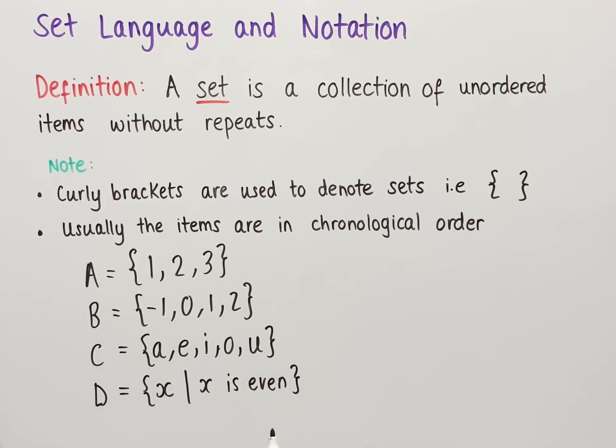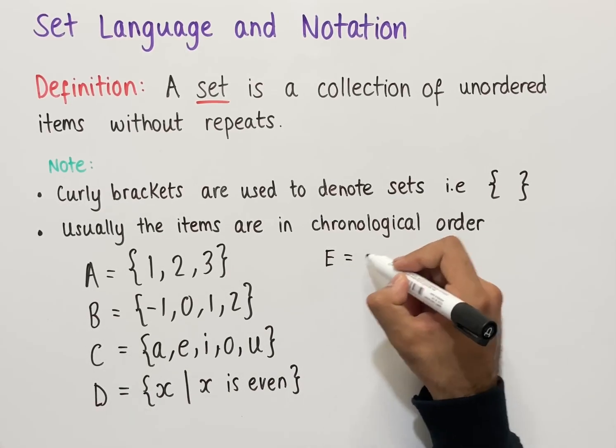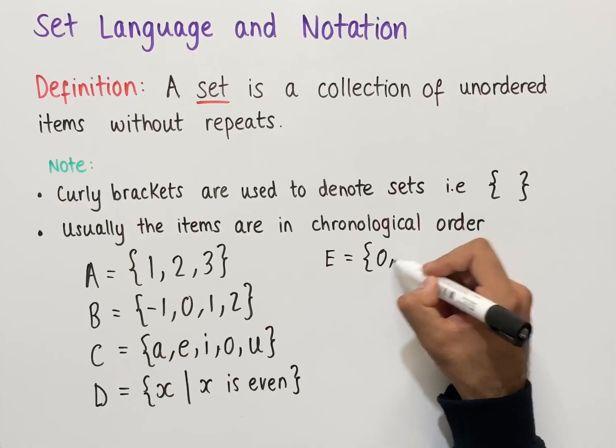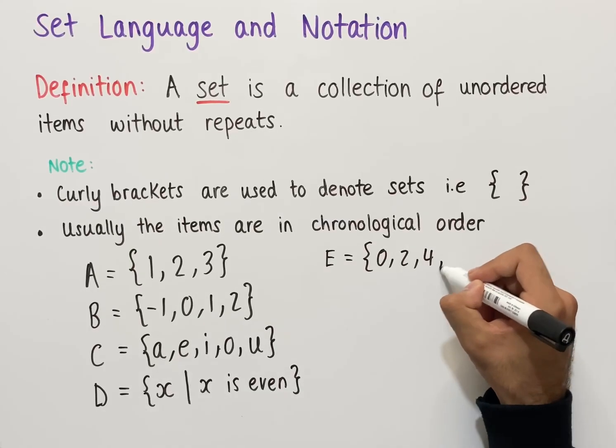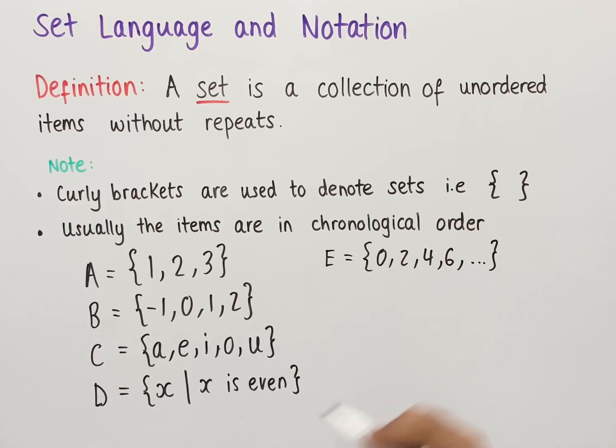Sometimes we might also use an ellipsis. If we rewrite this set, we could have the set E which is equal to 0, 2, 4, 6, and then we use the ellipsis at the end. This indicates that we've got the following pattern—we're adding two each time—and the ellipsis indicates that this carries on forever.